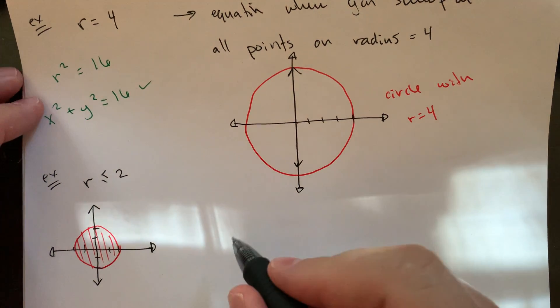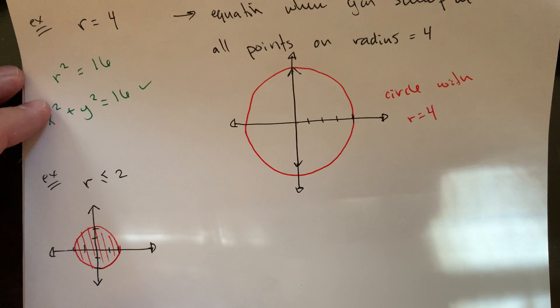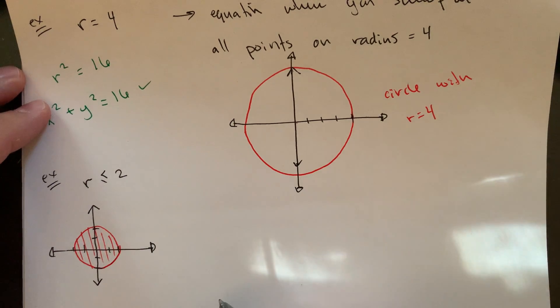You could kind of reverse that. What about something like radius strictly larger than three? So that's going to be circle with radius three and everything larger than.